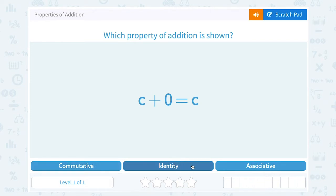Identity. Now think about that word identity. Identity is who you are. Who you are never really changes. So identity is the number that you can add that does not change the value. Well the only number you can add to something that doesn't change its value is 0. C plus 0 still gives us C. So this is an example of the identity property.